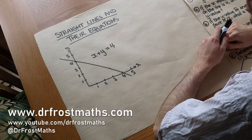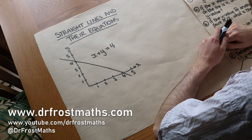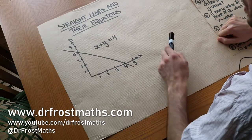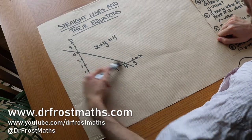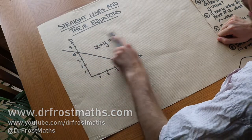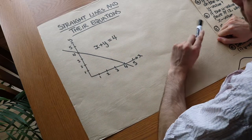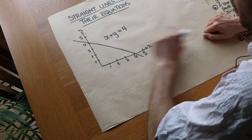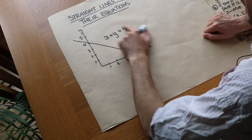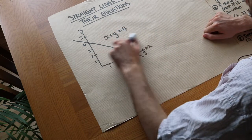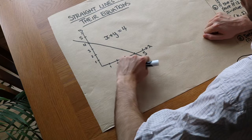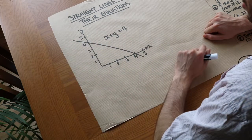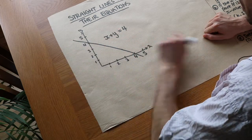Hello and welcome to this video on straight lines and their equations, where we look at the relationship between a straight line drawn and its equation. I've written the equation x plus y equals 4, and somehow this corresponds to this line here. What does this equation mean?